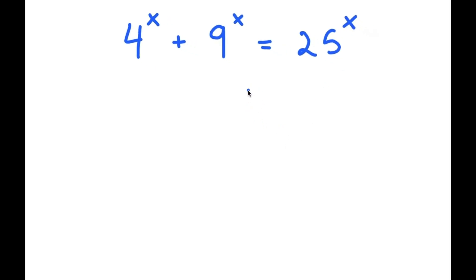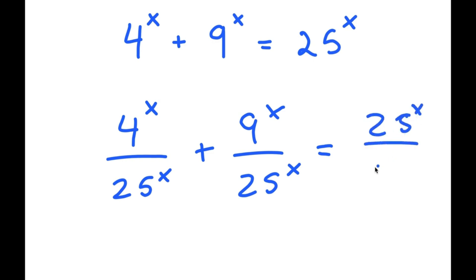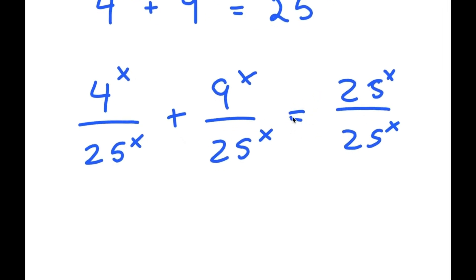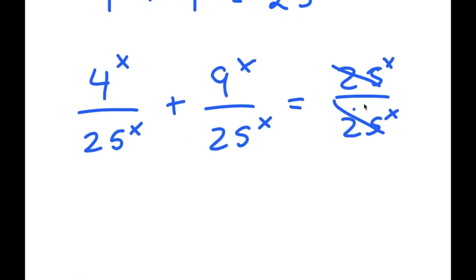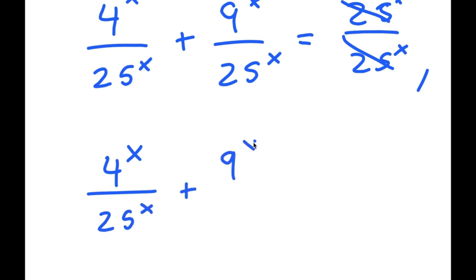So to solve this, I'm going to start off by dividing every term by 25 to the power of x. So I get 4 to the power of x divided by 25 to the power of x, plus 9 to the power of x divided by 25 to the power of x, is equal to 25 to the power of x divided by 25 to the power of x. The 25 and 25 cancel out for 1, so now I have 4^x over 25^x plus 9^x over 25^x is equal to 1.